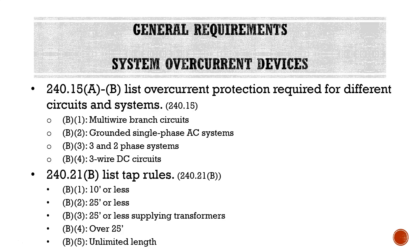The tap rules in 240.21 B won't be covered in great depth here as it's more advanced material, but it's important to know where to find them. Think of a tap the same way as with the fixture example — where you're making a joint or splice at some point in a circuit and tapping off to go to something else. We have specific rules we can use when making a tap, depending on how long those conductors are.